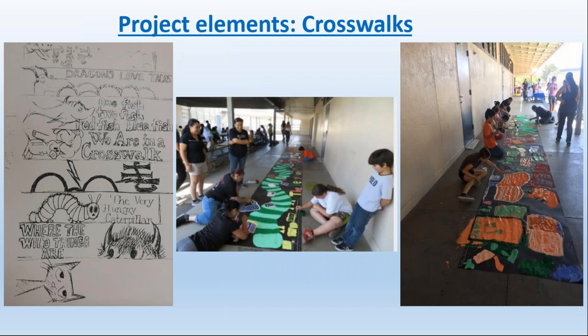The first temporary demonstration element we identified was an artistic crosswalk. An artistic crosswalk does two things: it provides an opportunity for communities to show their pride and engage creatively — students drew different designs connected to books they were reading — and it also makes the crosswalk much more visible for drivers to see.